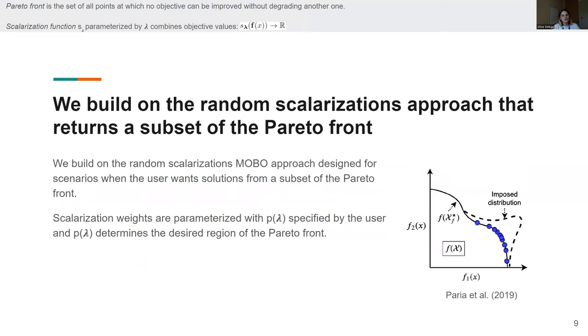We do this by building on the random scalarizations approach introduced by Perea et al., which is designed for scenarios when the user wants solutions from a subset of the Pareto front and not the entire Pareto front, which is quite commonly arising in real-world applications. And this approach acts on the scalarization function and specifically its weights.